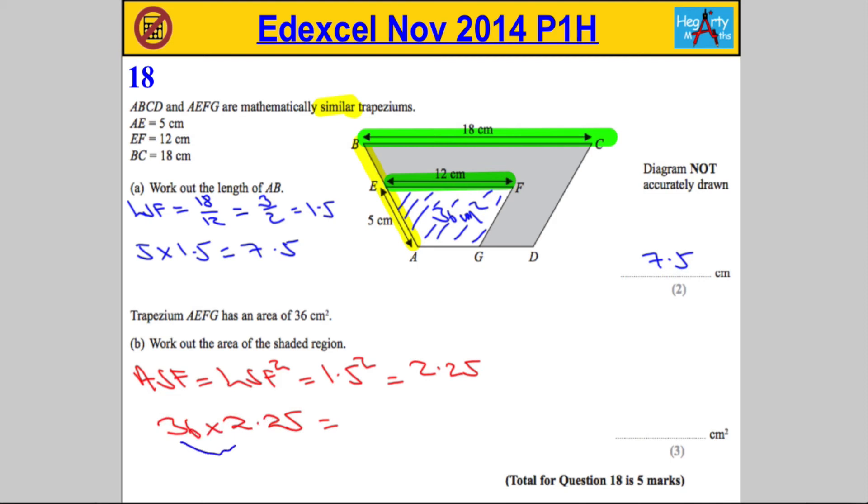So we should be able to work this out in our heads. If I double 36, so 36 times 2 is going to be 72, and 36 times 0.25—0.25 is a quarter.